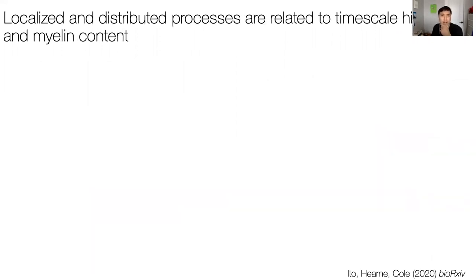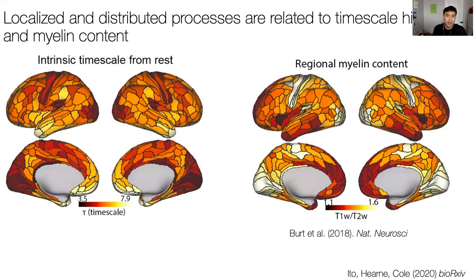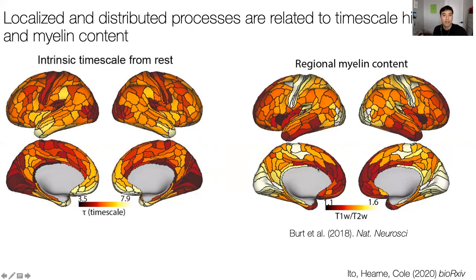We also compared differences in localized and distributed processes to other hierarchy measures: the intrinsic timescale hierarchy estimated from resting-state fMRI, and regional myelin content. These two brain maps are anti-correlated—visual areas tend to have fast or low timescales while temporal areas have slower timescales, with an opposite relationship in the myelin content map. These notions of hierarchy correlate with the observed differences in localized and distributed processes.